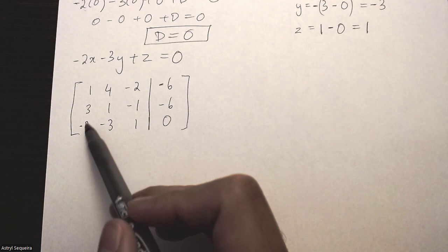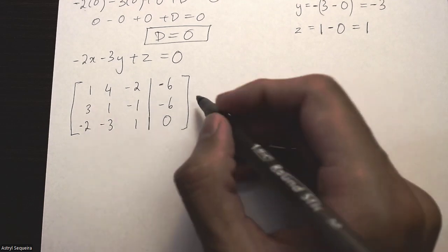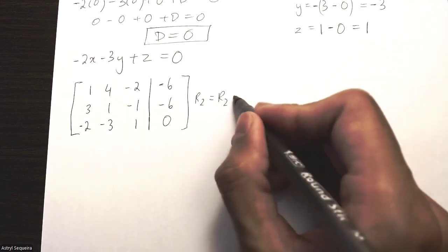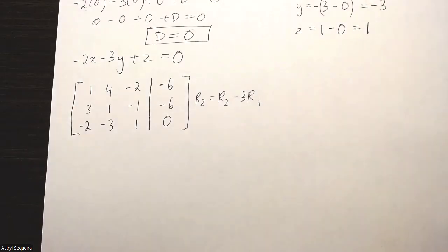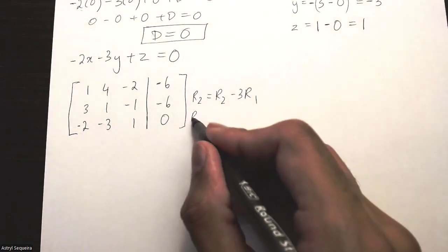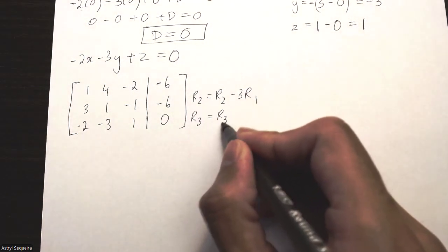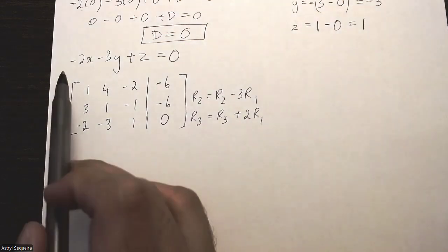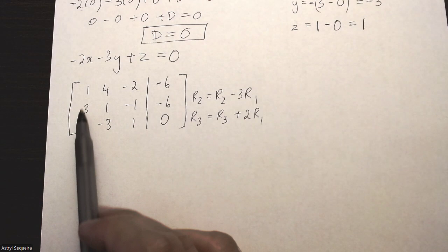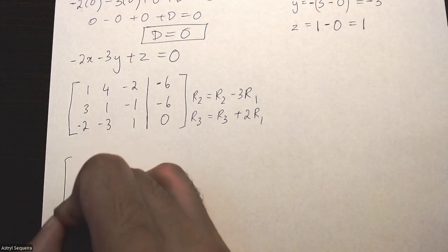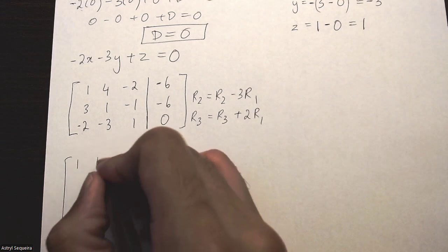So now I want to solve this matrix. The first thing I'm going to do is I'm going to turn these into zeros over here. So I'm going to do R2 equals R2 minus 3R1, and for row 3 I'll do row 3 equals row 3 plus 2R1. So using the first row, I'm going to eliminate these two values in my second and third row. Let's do my new matrix. My first row does not change at all.